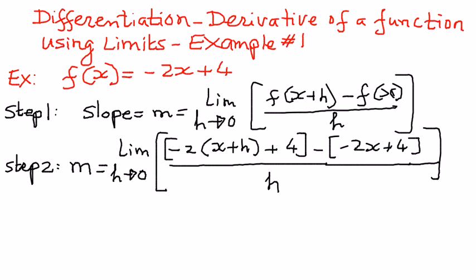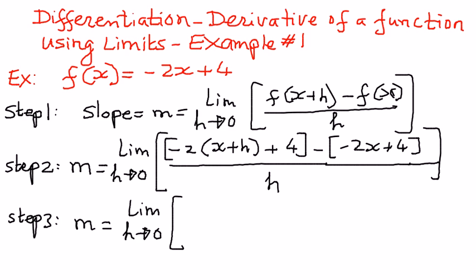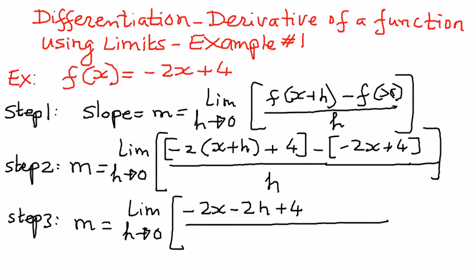Now we simplify the math. In step number 3, we will simplify the math. We are going to expand and distribute the negative 2 to every one of the terms inside the parenthesis. We can write this as negative 2x minus 2h plus 4, and then distribute this negative sign to every term inside the brackets: negative times negative 2x is positive 2x, and negative times positive 4 is negative 4, the whole thing divided by h.